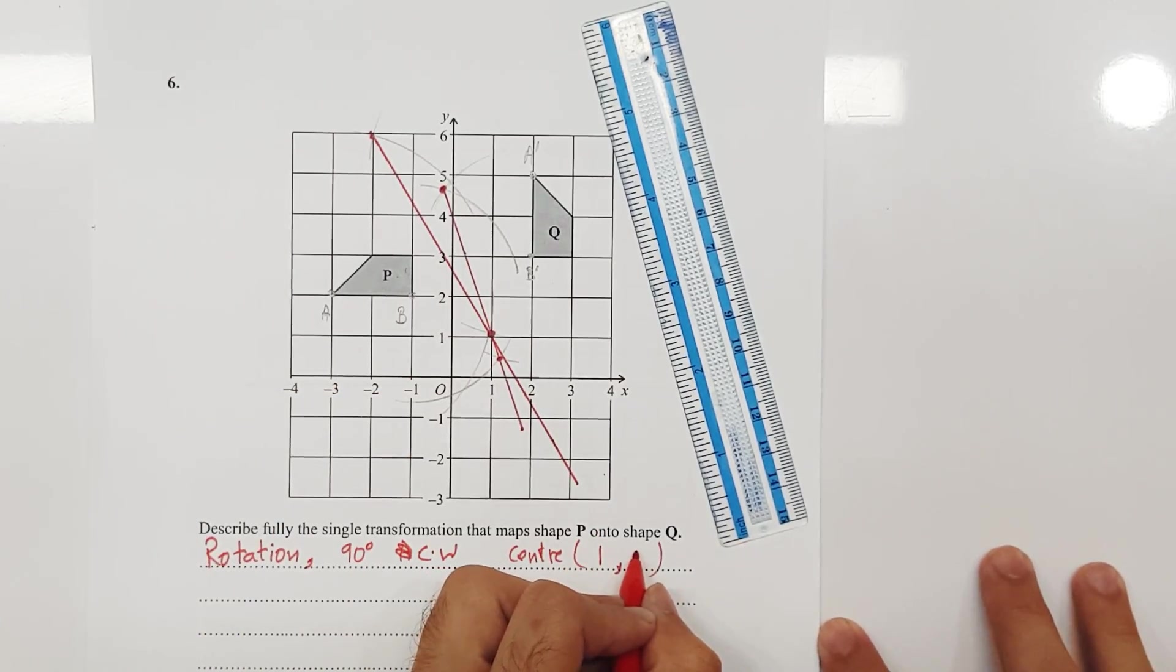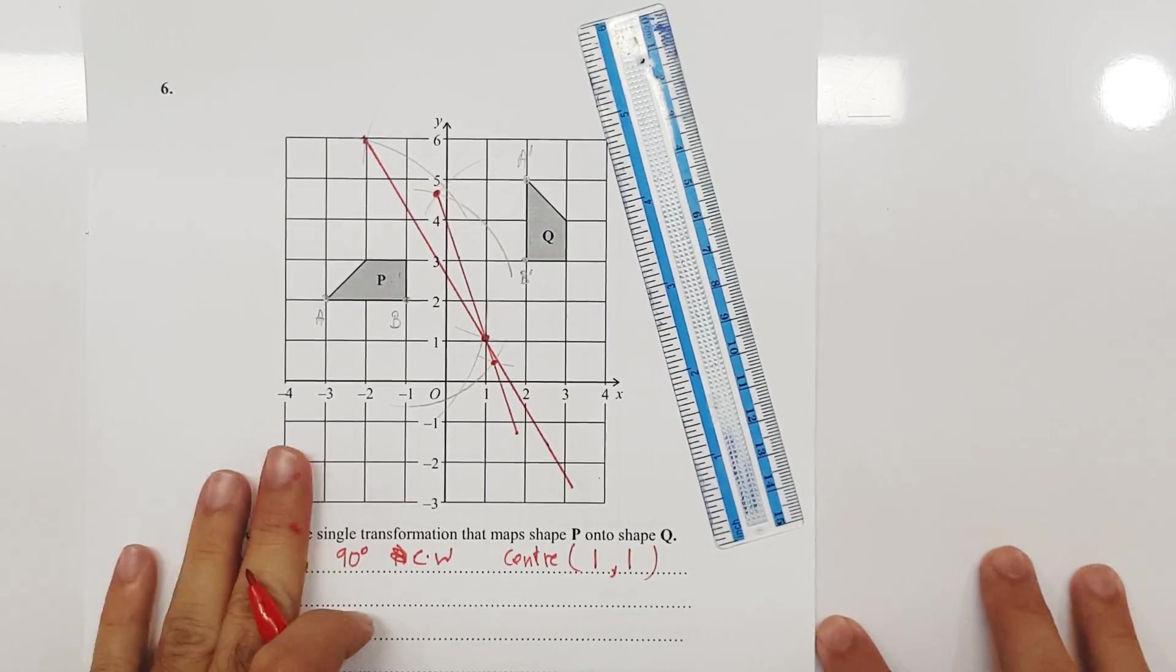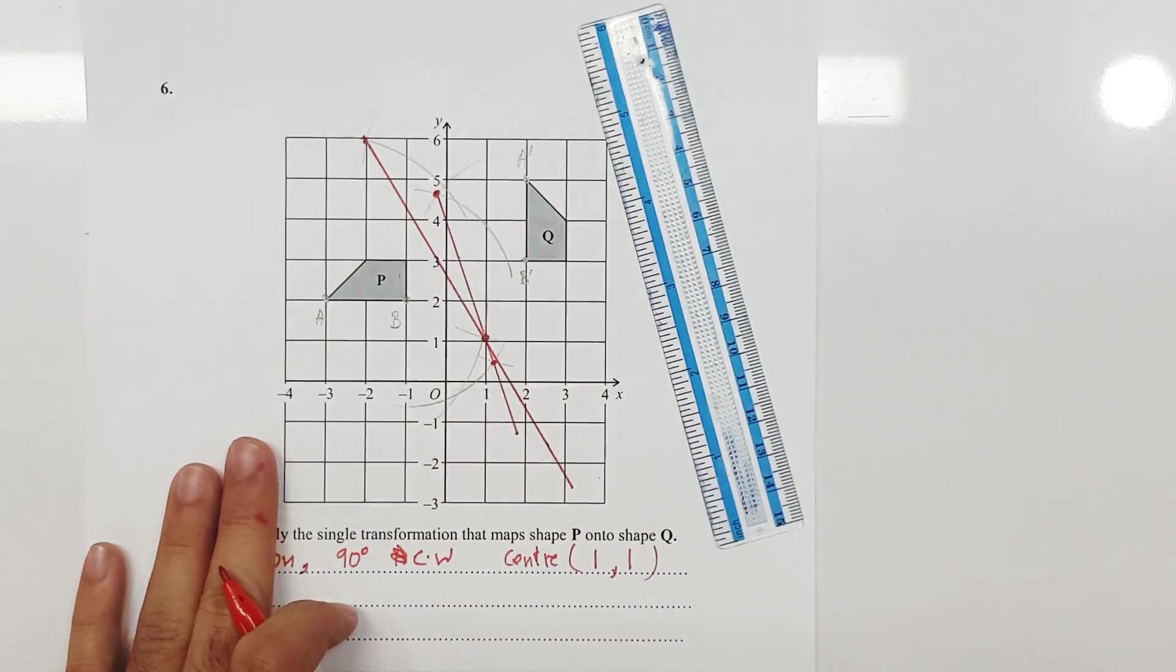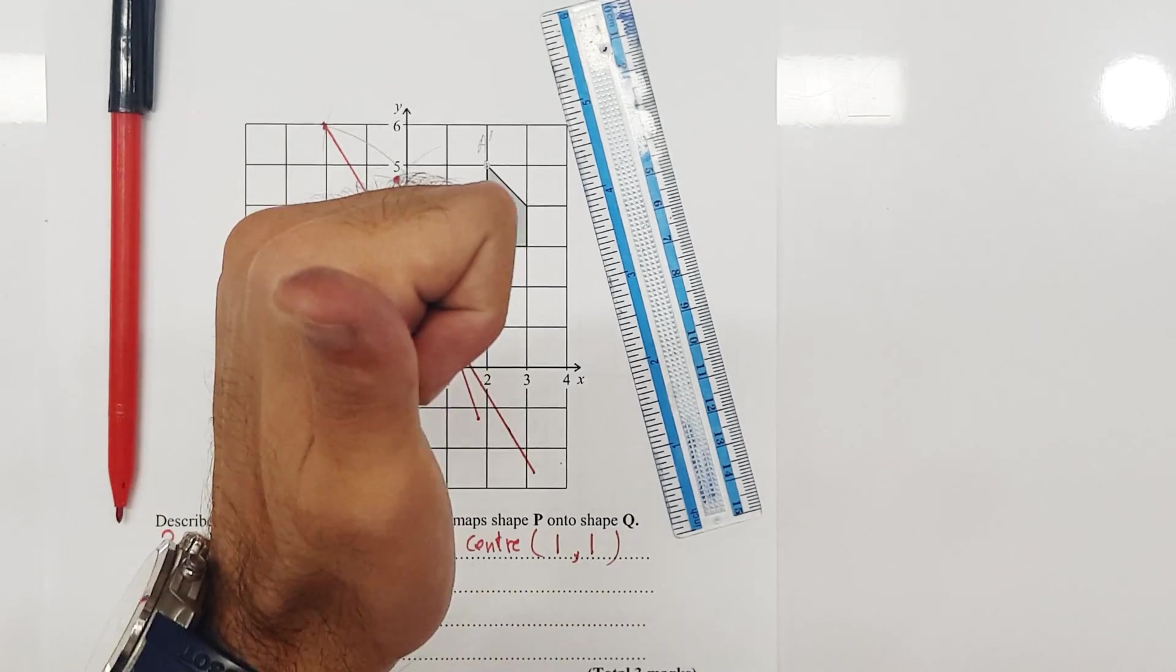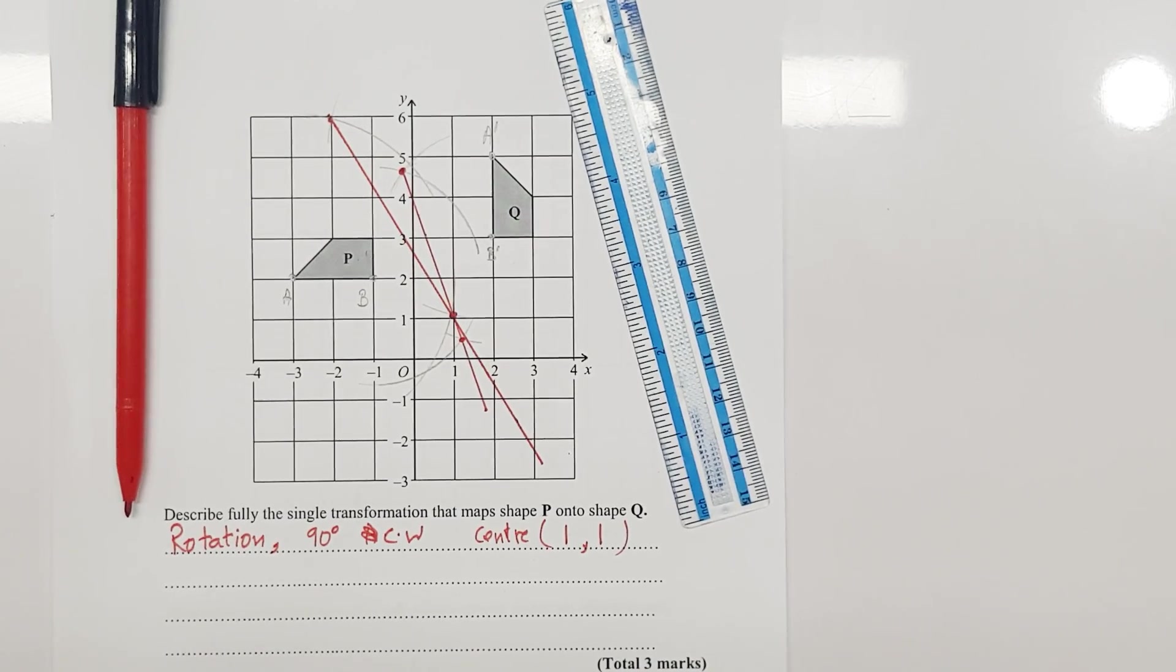So this right here is the center and it has coordinates of 1,1. So this is how you can find the center of rotation when you're given an object and an image and I hope you understood this concept. If you did you know what to do give it a thumbs up and don't forget to subscribe to my channel and share it with your friends classmates and whoever you think can possibly benefit. I'll see you guys in the next video. Until then take care. Allah Hafiz.